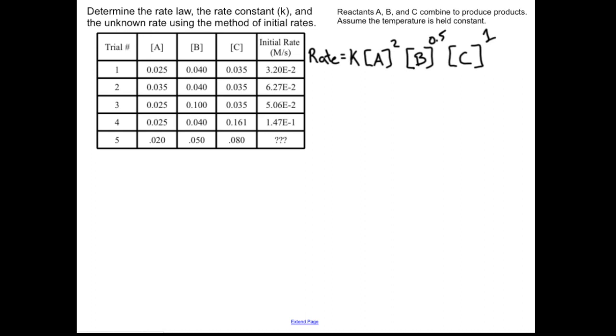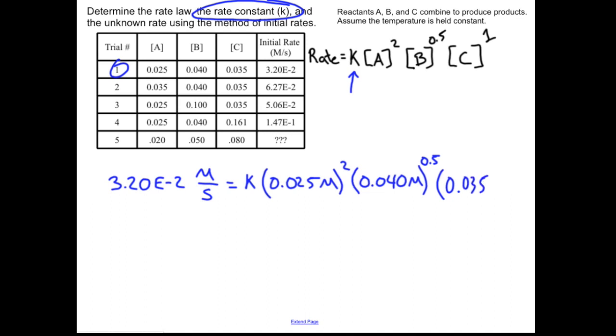Our work is nearly done. All we have now that's a variable is K. I'm going to tackle finding that rate constant. Given that it's a constant, it does not matter what trial I look to. I can do any of them, but I need to know the initial rate, so I guess I can't do trial 5. I pick one trial and plug in my numbers. 3.20E-2 molarity per second is equal to the variable I'm trying to find. 0.025—I'm doing trial 1, by the way—molar to the 2, 0.040 molar to the 0.5, 0.035 molar to the 1. Remember your order of operations. Do those powers first.